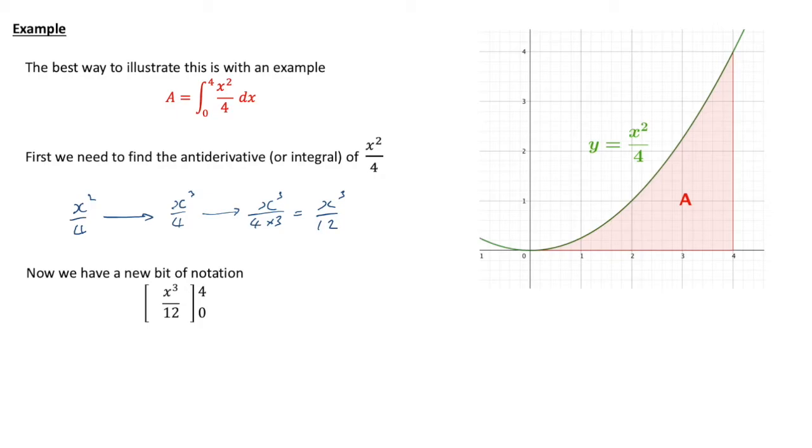Now there's a new bit of notation. Once we've found our antiderivative, we put it in square brackets and we put the boundary values of 0 and 4 at the top and bottom. So at the top goes the 4, at the bottom goes the 0, and inside the square brackets is the antiderivative of our function.